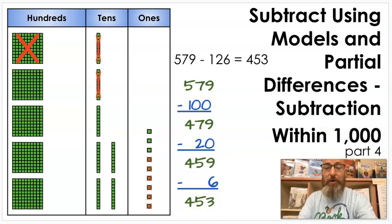Hello math makers and thank you for joining me for part four of our unit on subtraction within 1000. Today we're going to be learning about subtracting using models and partial differences. So far in part one we looked at subtracting tens and hundreds. In part two we looked at using a number line to subtract, counting up and counting back. In part three we looked at just using models and today we're going to look at how models can show us how partial differences works.